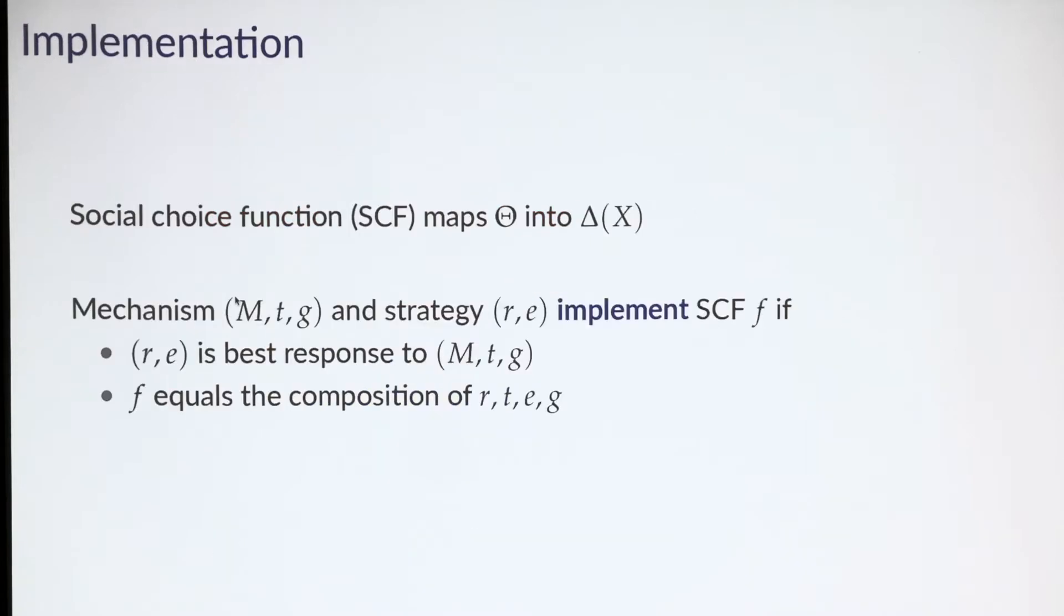Now that we have the model in place, just a few simple definitions, then we can move to results. We're interested in implementable social choice functions. A social choice function assigns a distribution of decisions to each type. We say that a mechanism together with a strategy implements a social choice function if two conditions are satisfied: the strategy must be a best response for the agent given the mechanism, and the composition of the strategy and mechanism must yield the function f. A social choice function f is implementable if it's implemented by some mechanism or strategy.